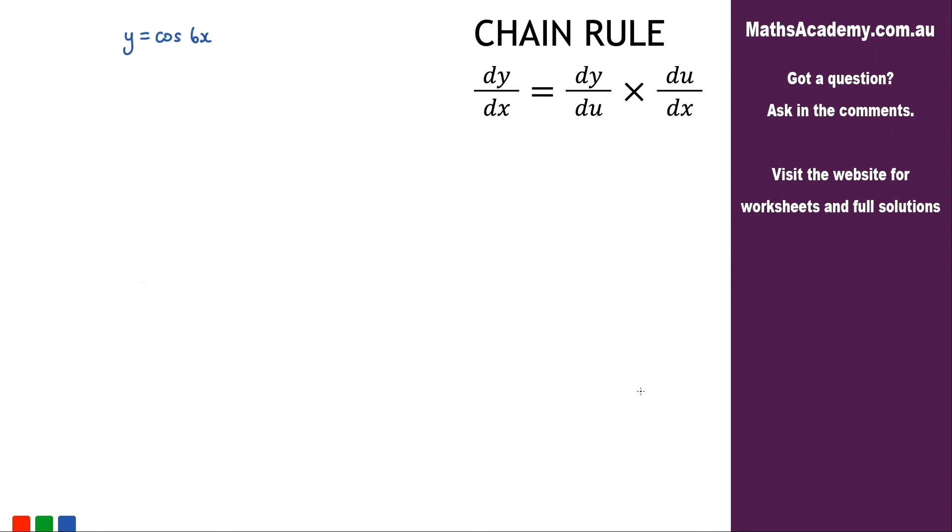Welcome to today's lesson and another easy one today. We have to differentiate y equals cosine of 6x. You can see over here on the right hand side we're going to be using the chain rule.